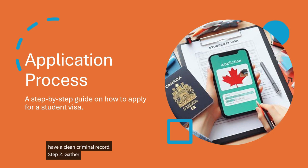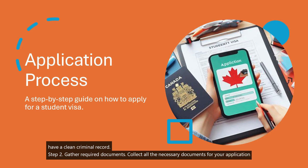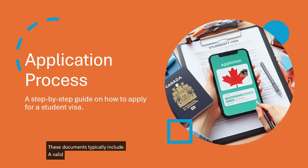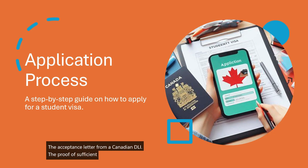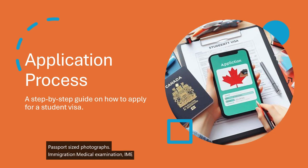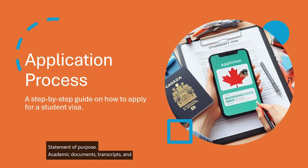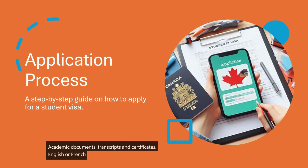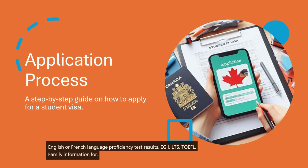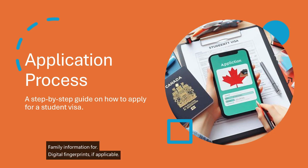Step 2 — Gather Required Documents: collect all the necessary documents for your application. These typically include a valid passport, the acceptance letter from a Canadian DLI, proof of sufficient funds, passport-sized photographs, Immigration Medical Examination (IME) results if required, a police clearance certificate, a statement of purpose, academic documents (transcripts and certificates), English or French language proficiency test results (e.g., IELTS, TOEFL), a family information form, digital fingerprints if applicable, and visa application forms IMM 1294 and IMM 5645.